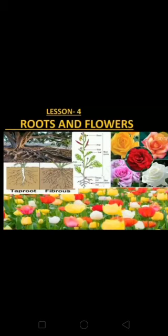As we know, plants are also living beings like us. Just as we need air, water and food to grow, plants also need air, water and sunlight to grow. As in the human body, different parts are there and they work in different manners. In the same way, plants also have different parts for different work. They perform different functions and also help plants to grow, obtain food, and stand in an upward and straight position.